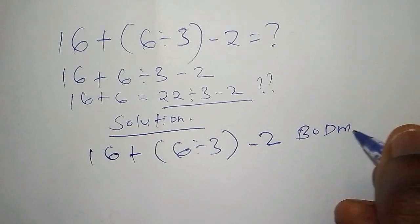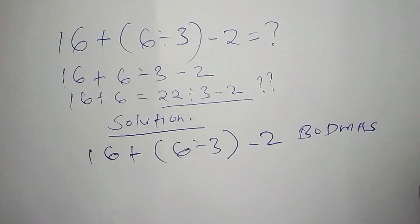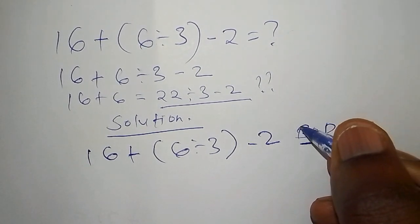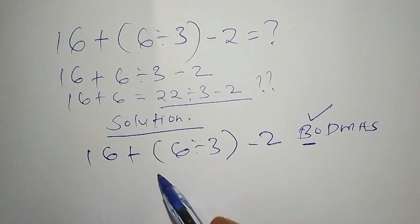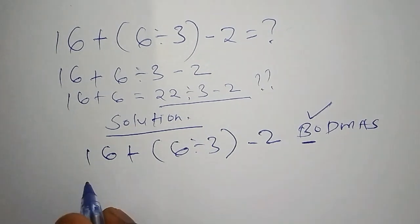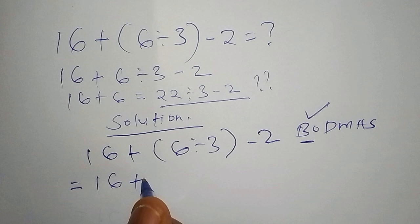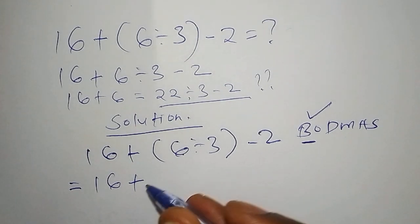We start with working out the bracket first. B stands for bracket, so we must work out the bracket first. We shall say this equals 16 + 2 - 2, because 6 ÷ 3 = 2.